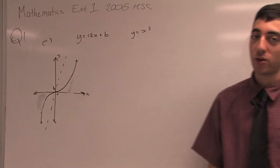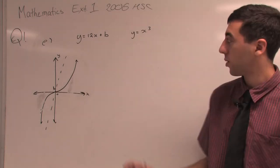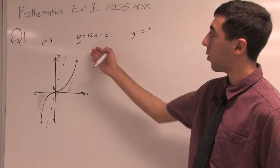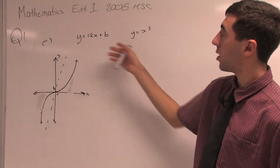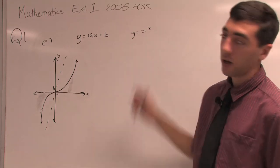Question 1e. Now you may want to refer to this on your computer screen because the question is asking for what values of b is the line y = 12x + b tangent to the graph of y = x³.